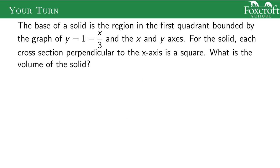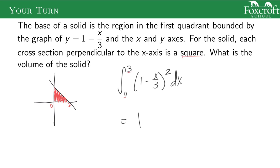Here's one to try on your own: you have a region and each cross-section is a square. The region is y = 1 minus x over 3, which starts at zero and ends at three (when y equals zero, x equals three). Each cross-section's area is the side squared, so the side length is (1 minus x over 3), and we square it. Put that into a calculator and you get 1. The main focus is setting up the integral correctly rather than computing the final answer.